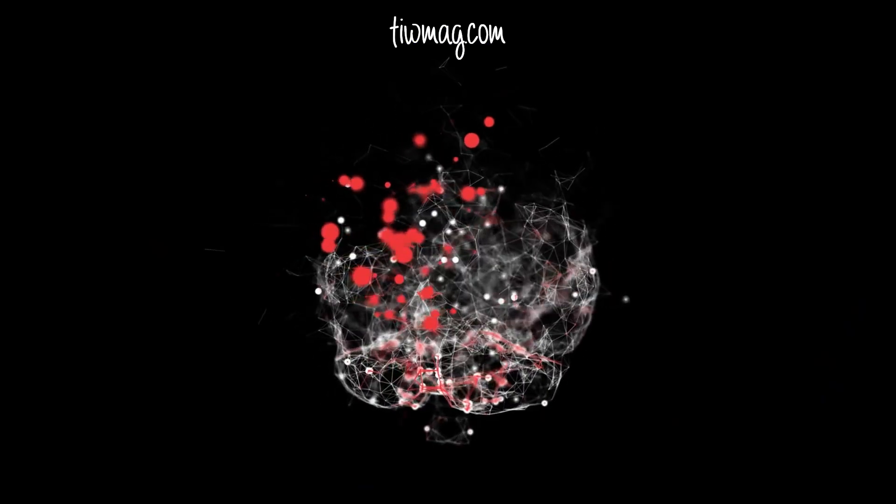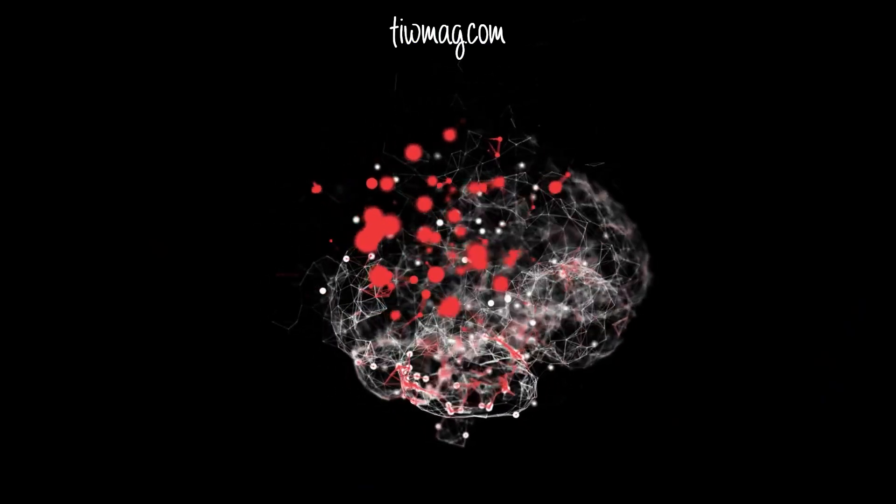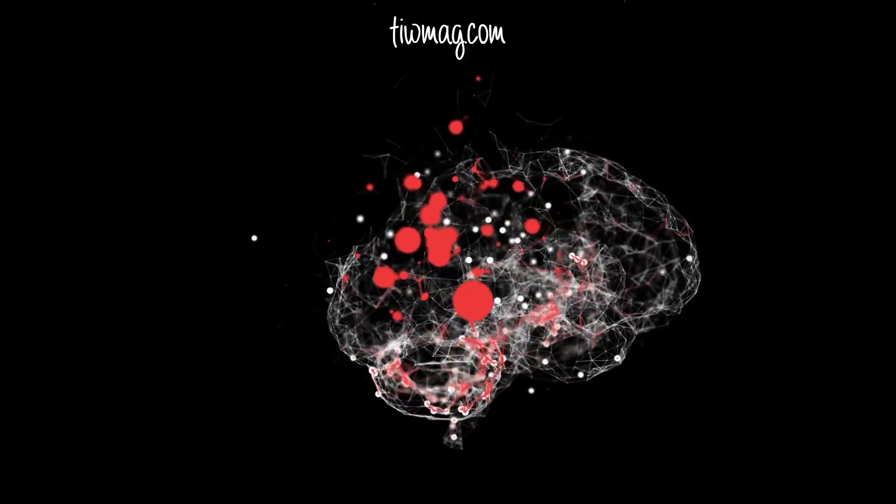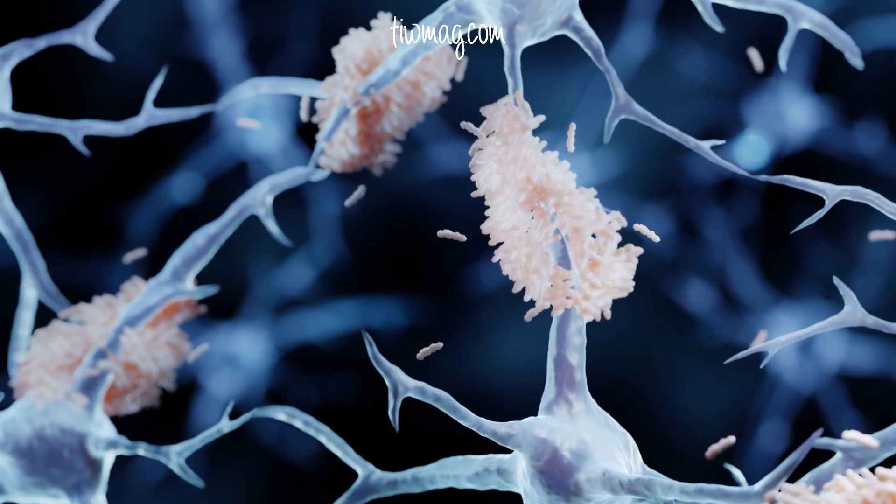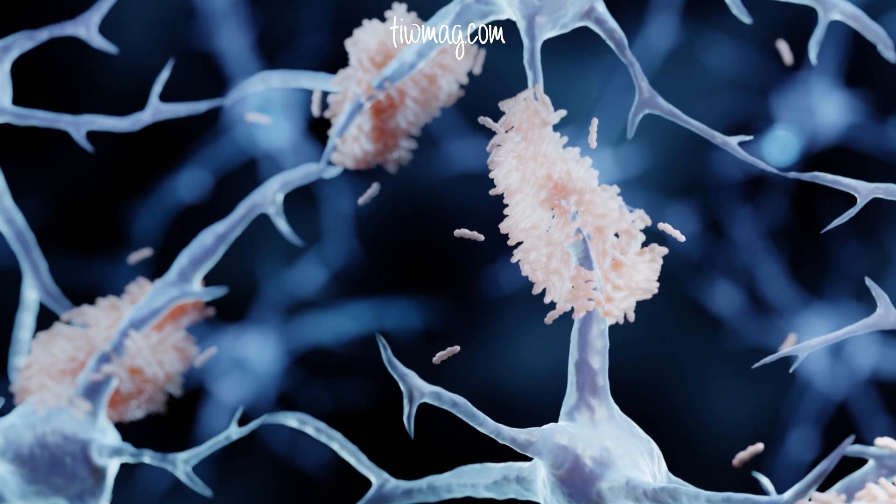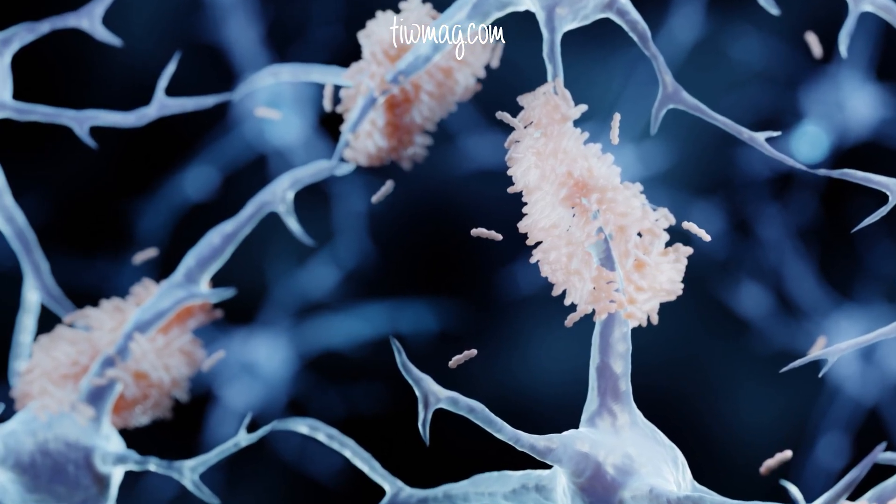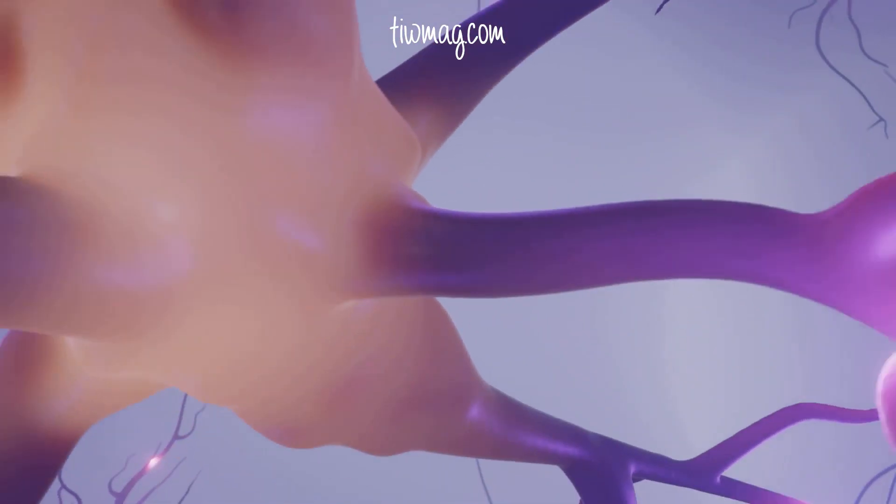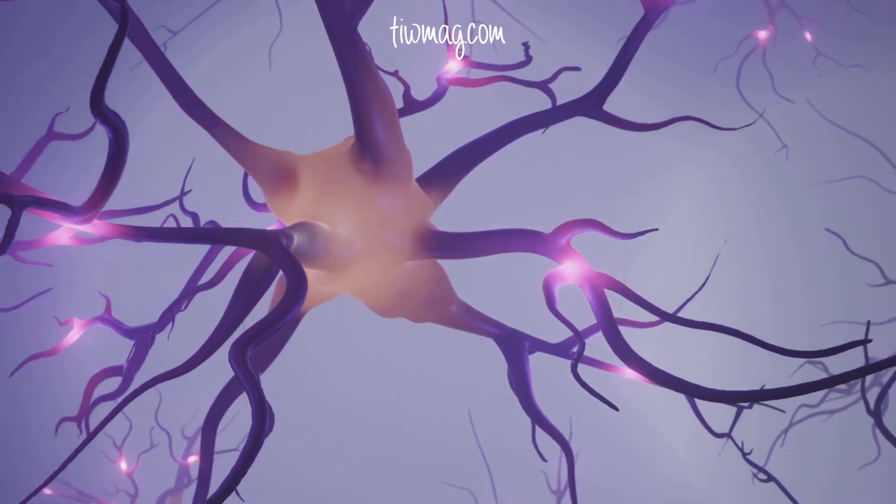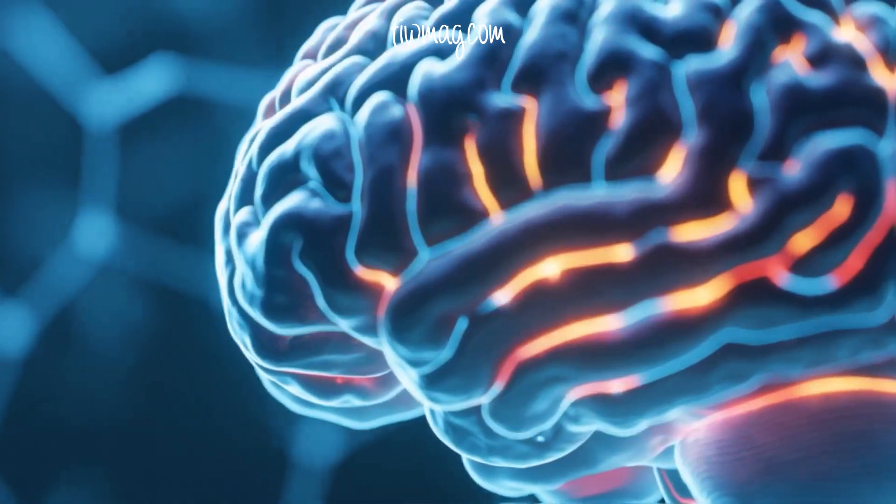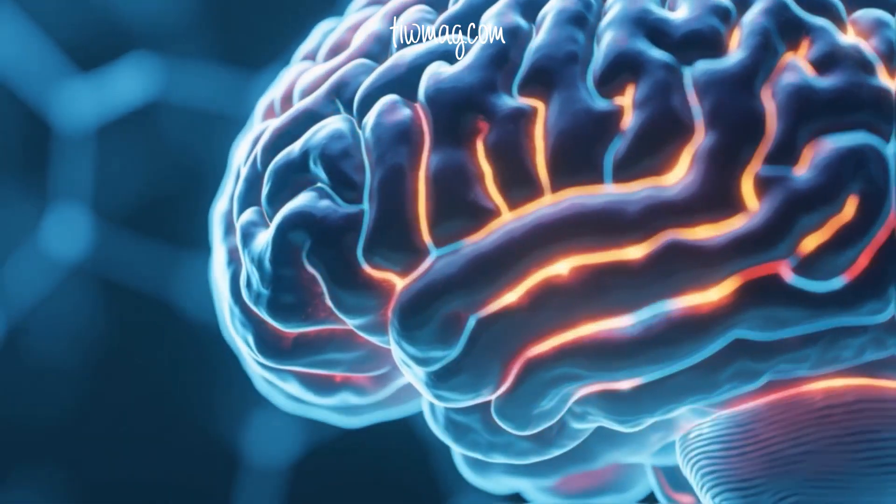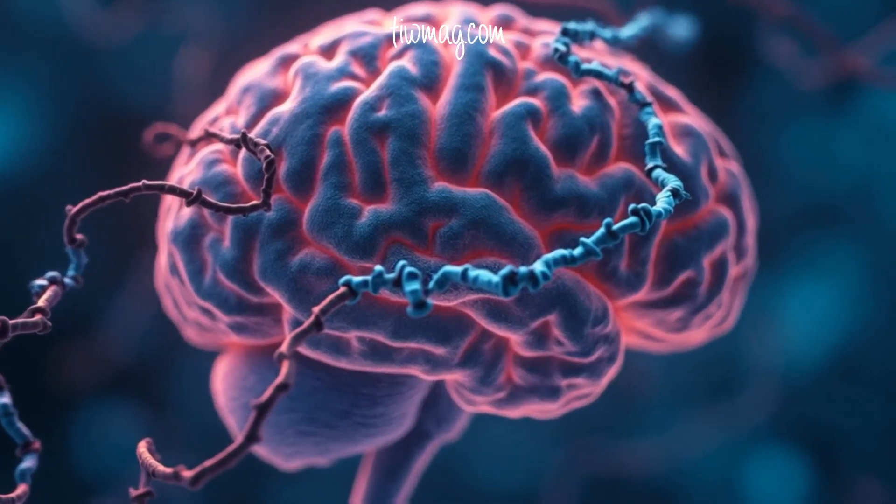However, this protective response could come at a cost. An overproduction of amyloid beta in response to repeated viral reactivations of the HSV-1 virus may lead to the formation of plaques, ultimately contributing to the progression of Alzheimer's disease. In addition, beta amyloid accumulation in the nucleus of the forebrain causes the loss of acetylcholine, the neurotransmitter essential for memory and learning.